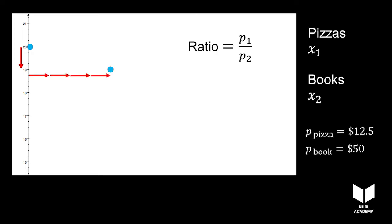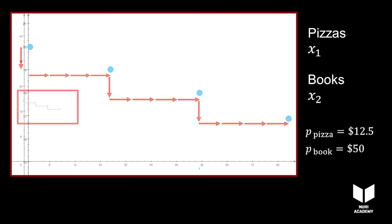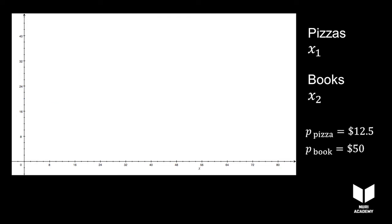...is the same for the second and third book you cut back. For every fewer book you purchase, you can buy four more pizzas. Since the ratio is constant, what connects the two intercepts will be a straight line.